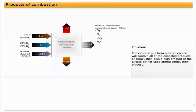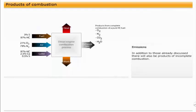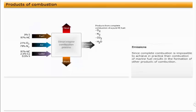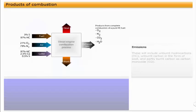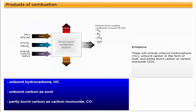The exhaust gas from a diesel engine will contain all of the expected products of combustion, plus a high amount of the excess air not used during combustion process. In addition to those already discussed, there will also be products of incomplete combustion. Since complete combustion is impossible to achieve in practice, then combustion of marine fuel results in the formation of other products of combustion. These will include unburnt hydrocarbons, unburnt carbon in the form of soot, and partly burnt carbon as carbon monoxide.